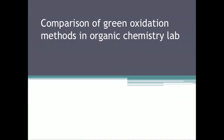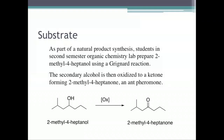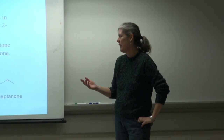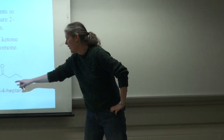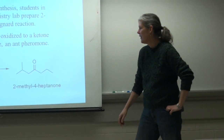I'm going to talk about a comparison of some green oxidation methods we performed in our sophomore organic chemistry lab this year. Our students, as part of a natural product synthesis, used a Grignard reaction to make 2-methyl-4-heptanol, and then the next week in lab they used an oxidation to oxidize that secondary alcohol to the ketone.